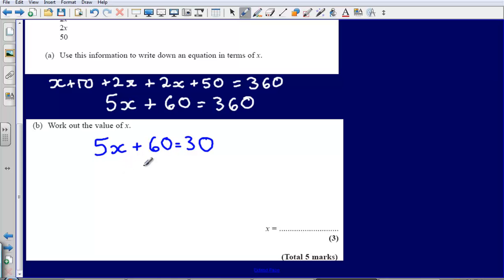So the first thing that I'm going to do is I'm simply going to subtract 60 from both sides. So what that leaves me with, that leaves me with just 5x.